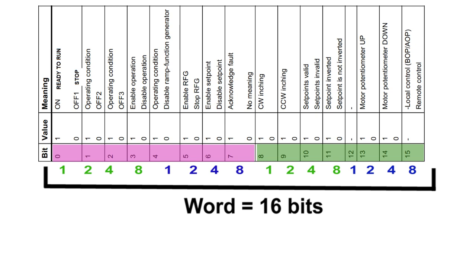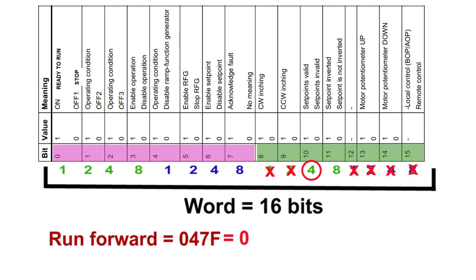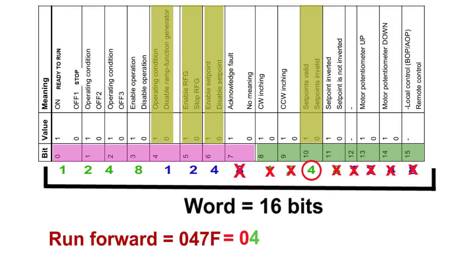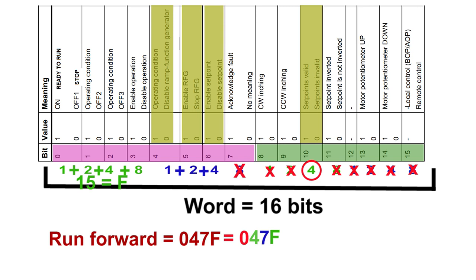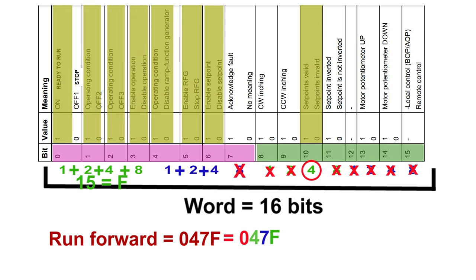How is the code 047F created? The last four bits are not used, so it equals 0 — that 0 comes at the first place. From the next 4 bits, we use bit number 10, whose value is 4 — so 4 comes at the second place. From the next 4 bits, we use bits 4, 5, and 6; adding those values gives 7 — so 7 comes at the third place. From the last 4 bits, all four are on, giving a sum of 15, which in hexadecimal is F. So the code is 047F. Sending this to the control word via Profibus starts the motor in the forward direction.